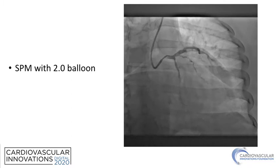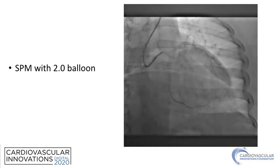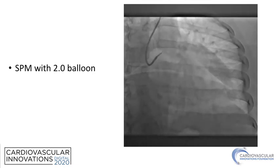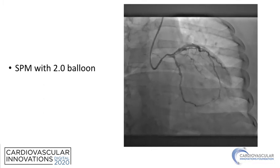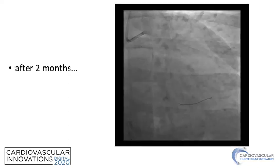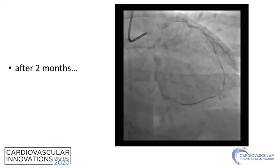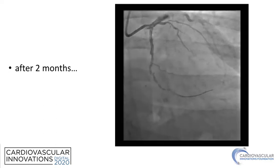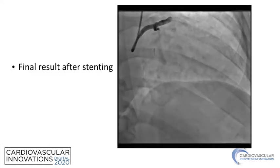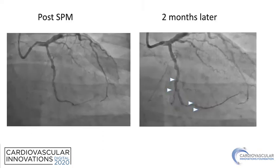Following that, the vessel is dilated and there is distal flow. However, note the absence of many side branches. Stenting at this point is not advised, so the decision was made to bring the patient back two months later. At that point, the dissection planes are somewhat healed and many side branches are visible. The vessel was stented with a good final result — highlighting the difference between immediately post-SPAM and two months later, with recruitment of side branches at follow-up.